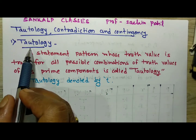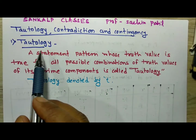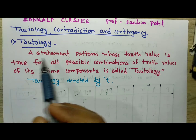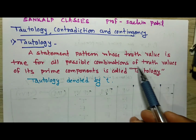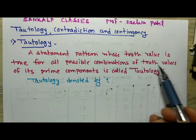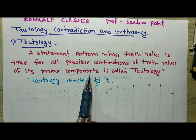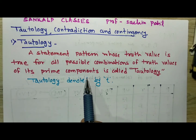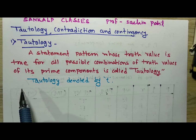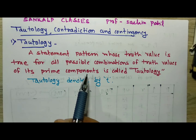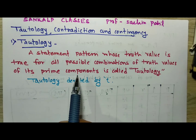First of all we are going with Tautology. According to the definition, a tautology is nothing but a statement pattern whose truth value is true for all possible combinations of truth values of its prime components. That means the statement pattern has truth value T everywhere, and then this statement pattern is called a tautology.